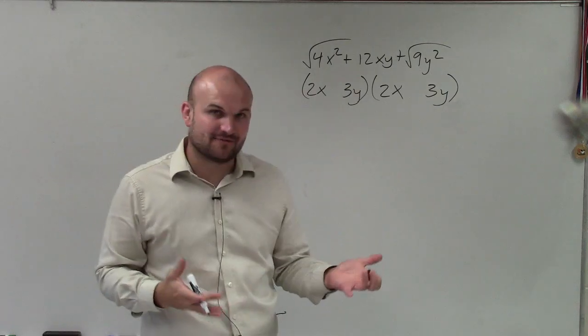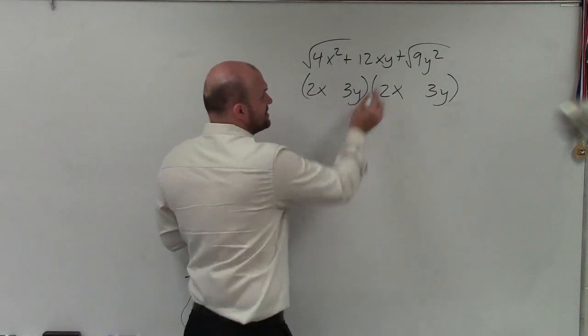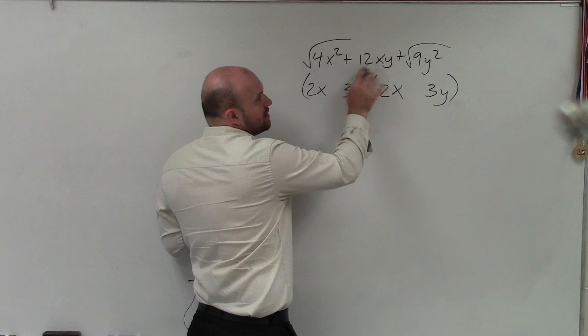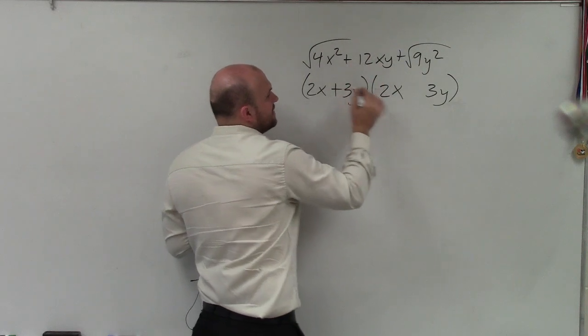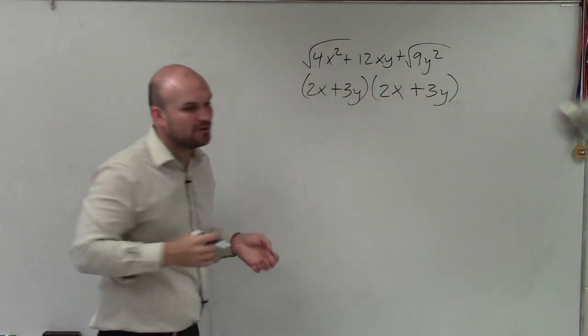Now, am I adding or subtracting for each of these expressions? And to do that, we look into our middle term. And since our middle term is positive, I would say, all right, so for this to be a perfect square trinomial, then these would have to be my two factors.